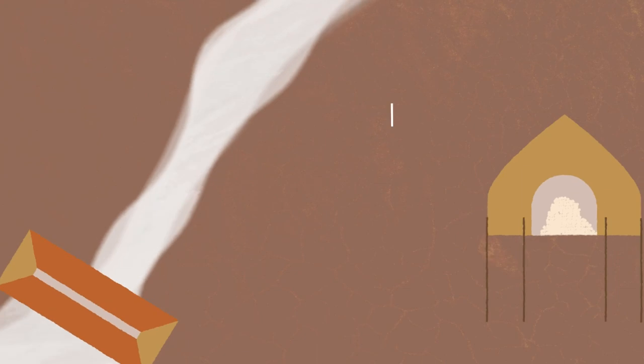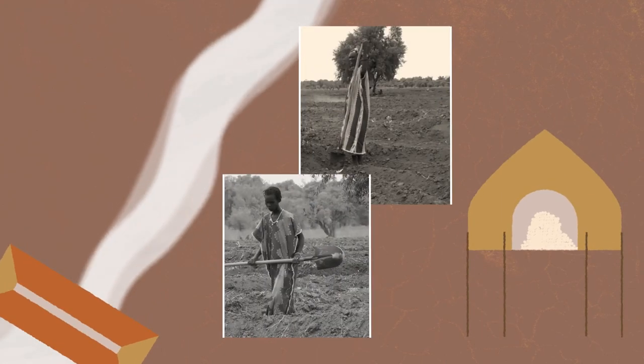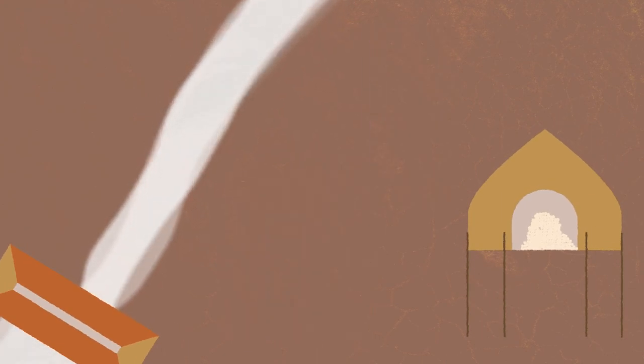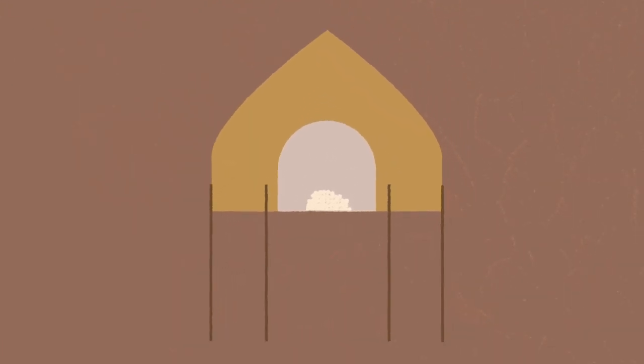When large dams are built to provide renewable energy, that natural cycle of annual flooding is interrupted and people downstream can no longer practice flood recession farming, leaving them vulnerable when it comes to food security.